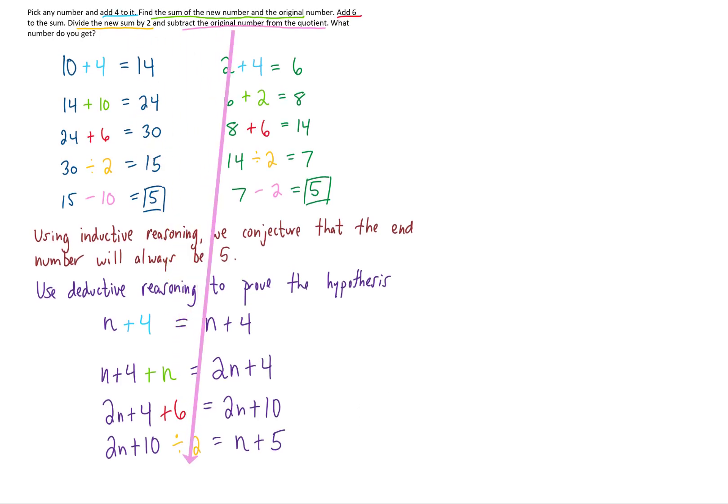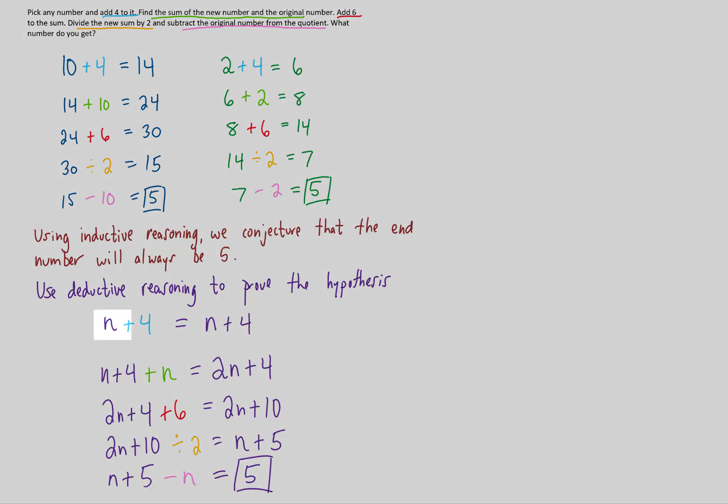Now taking that answer, which was n plus 5, and subtracting our original number, which was n, we arrive at the conclusion that our final number is always going to be 5, regardless of what n value we start with. So we started this process with a general n, and using deductive reasoning came to the specific conclusion that no matter what n we start with, our final result of this process is going to be the number 5.